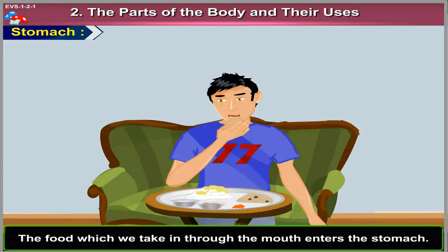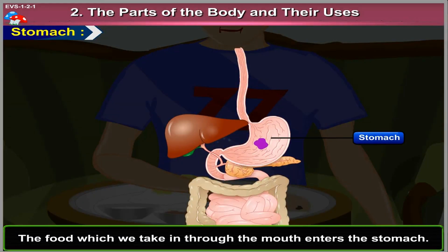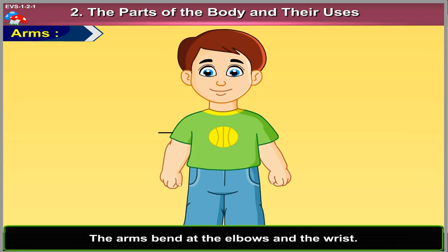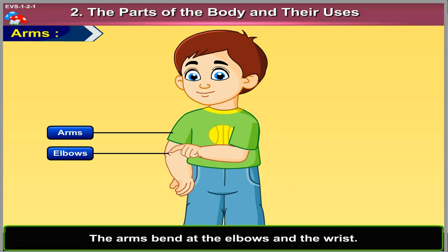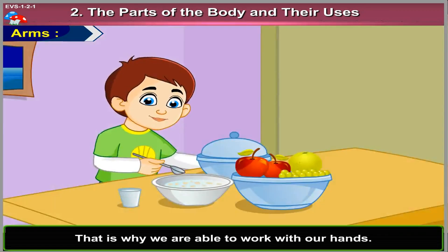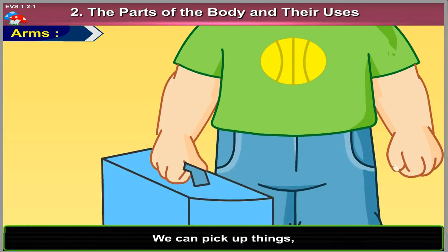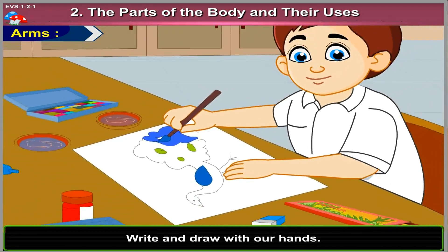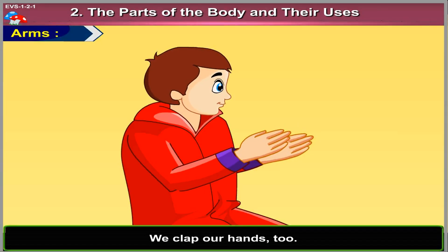Stomach. The food which we take in through the mouth enters the stomach. The arms bend at the elbows and the wrist. Our fingers bend too. That is why we are able to work with our hands. We can pick up things and draw with our hands. We clap our hands too.